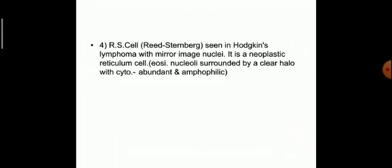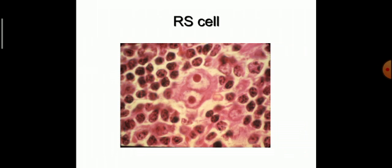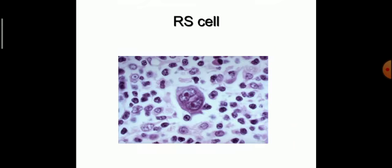The Reed-Sternberg cell has mirror-image nuclei; it is a neoplastic reticulum cell with eosinophilic nucleoli surrounded by a clear halo, and abundant amphophilic cytoplasm. This is a picture of the RS cell with mirror-image nuclei, and you can again see the RS cell with mirror-image nuclei in another image.